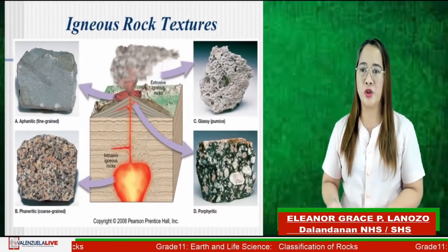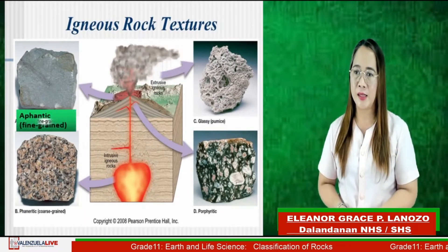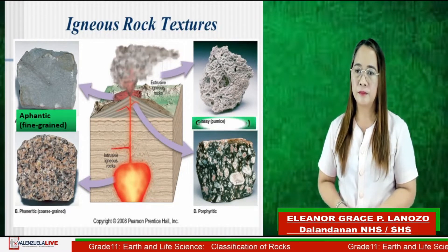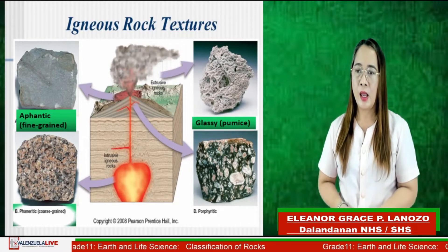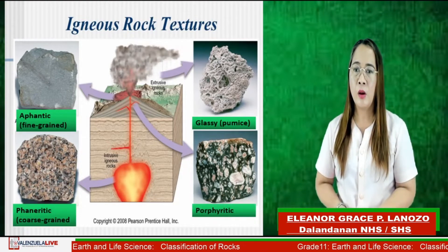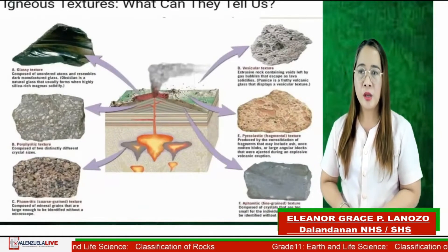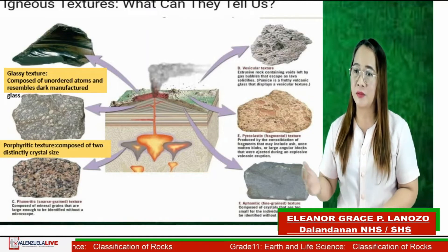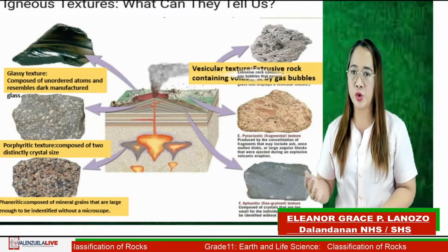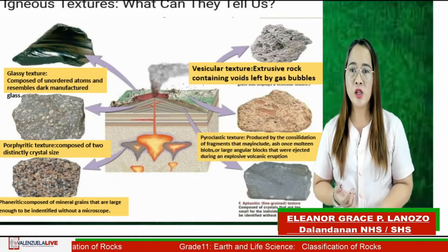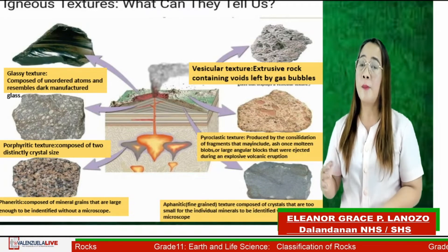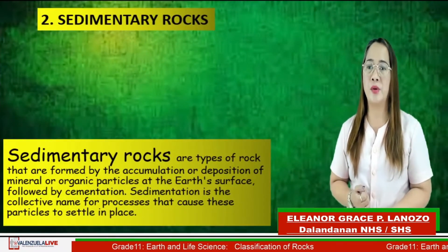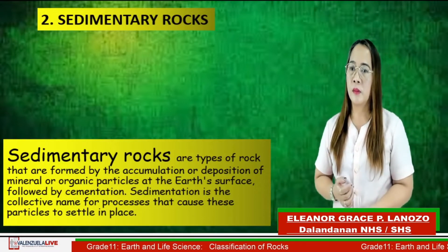The textures of igneous rocks include aphanitic, glassy, pumice, porphyritic, and phaneritic textures. The number one is glassy texture, the second is porphyritic texture, the third is phaneritic texture, vesicular texture, pyroclastic texture, and aphanitic texture.